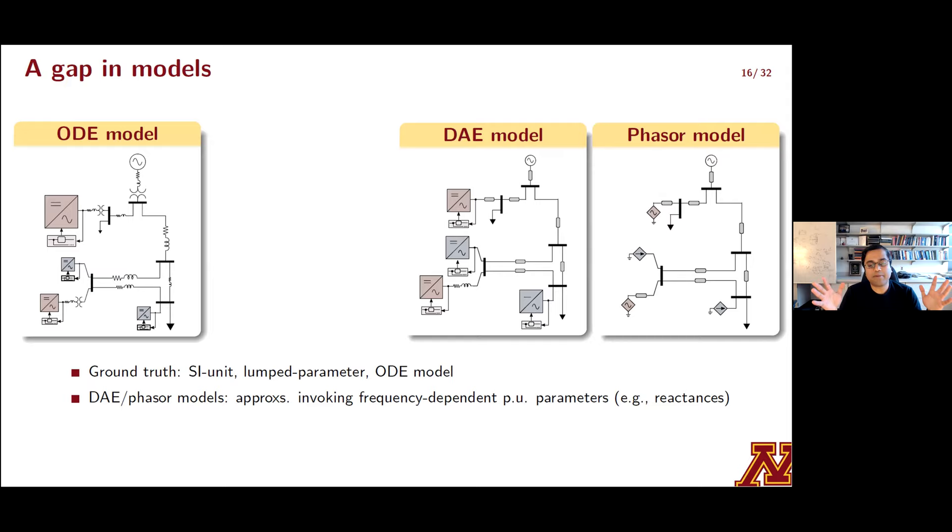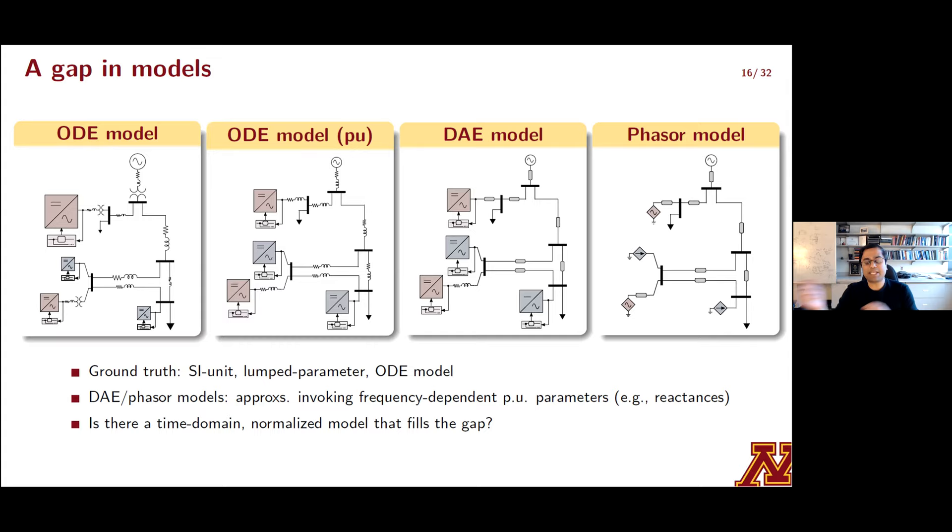We'll also take a step back and look at the bigger picture from a network simulation point of view. With apologies to the positive sequence modeling crowd, I'm going to consider the ground truth as that established by a lumped parameter ODE model. And all variables and parameters in this model are going to be represented in SI units. DAE and phasor models that are frequently used are indeed approximations. They invoke frequency dependent per unit network parameters like reactances. And without questioning the validity of these approximations and what the approximation errors are or could be, it really should bother us that there is a gap between these two classes of models, and it's not addressed in a very rigorous way in the literature. So the procedure that I'll outline for per unit modeling will actually reveal a normalized time domain model that neatly fills this gap.